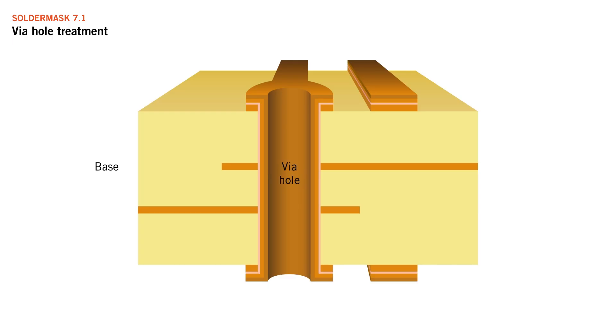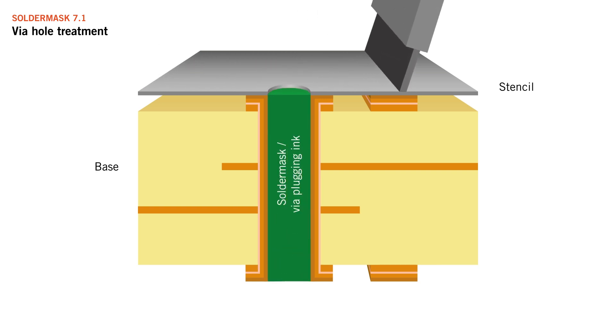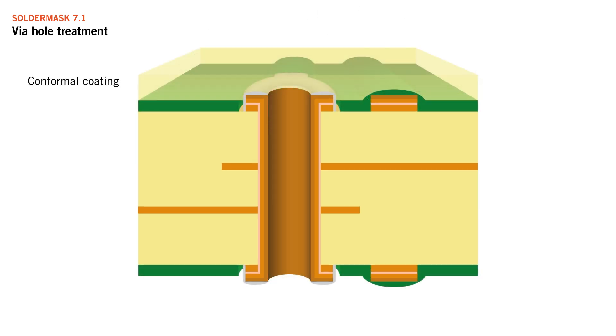We use a screen printing process to push as much ink into these holes as we can. In the assembly process, one benefit is when conformal coating is required - via plugging prevents the liquid or resins from leaking through to the bottom side.